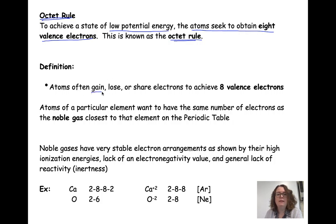Atoms gain, lose, or share electrons to achieve our eight valence electrons, octet rule. And what happens here is that the atoms of a particular element want to have the same number of electrons as the noble gas closest to them on the periodic table.